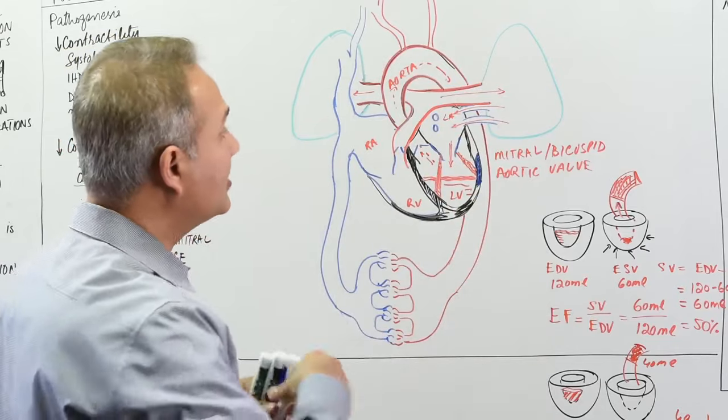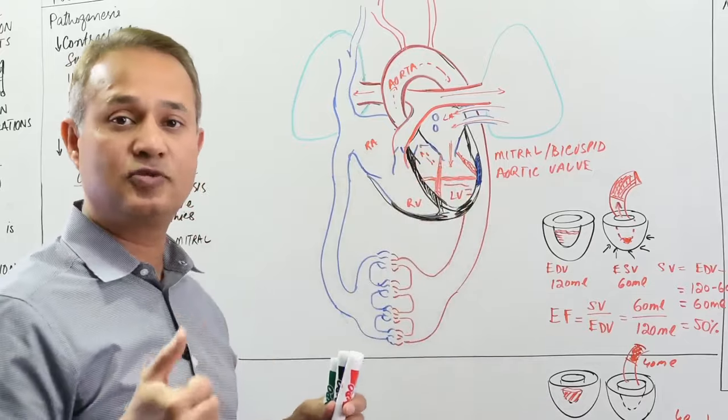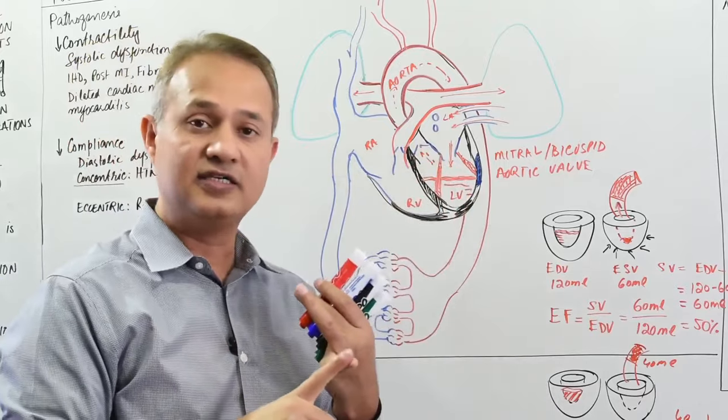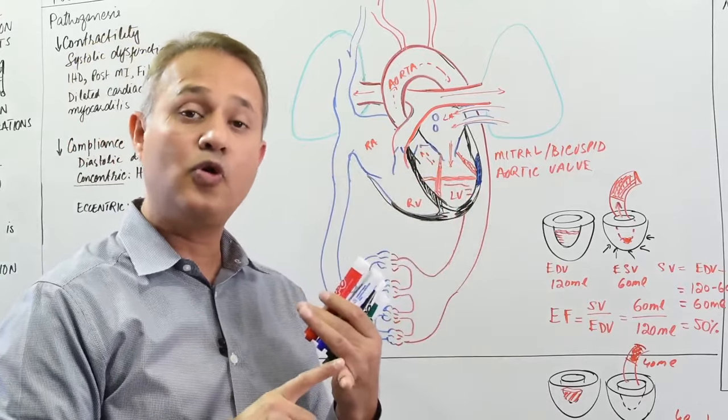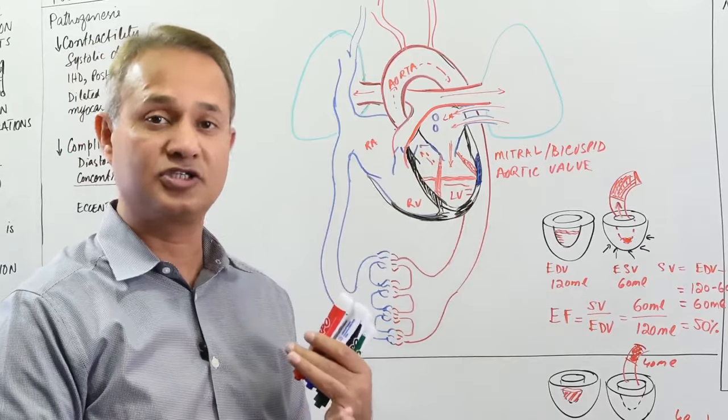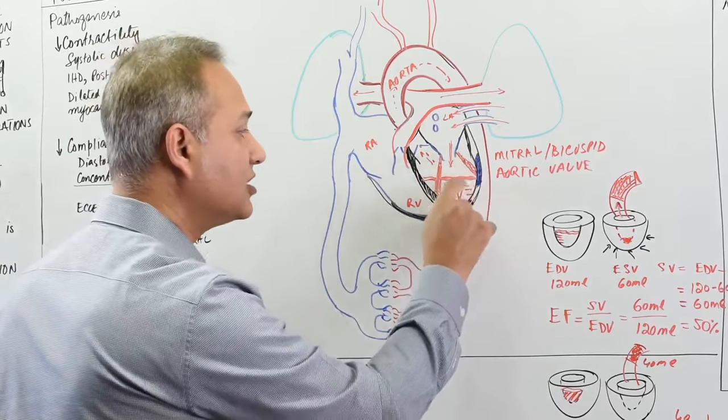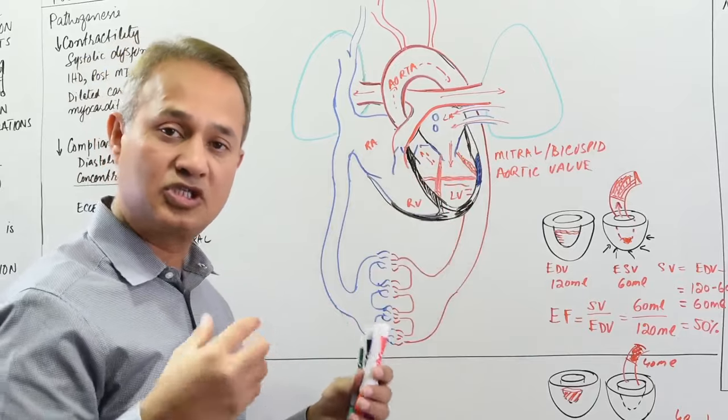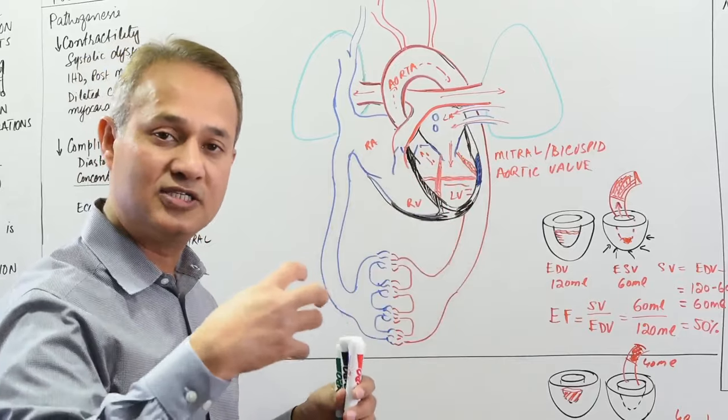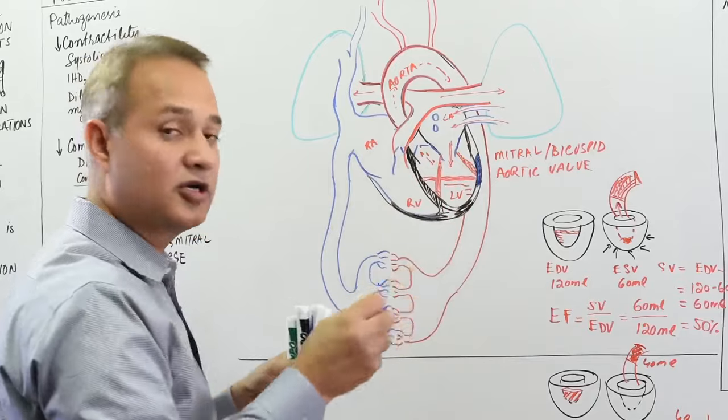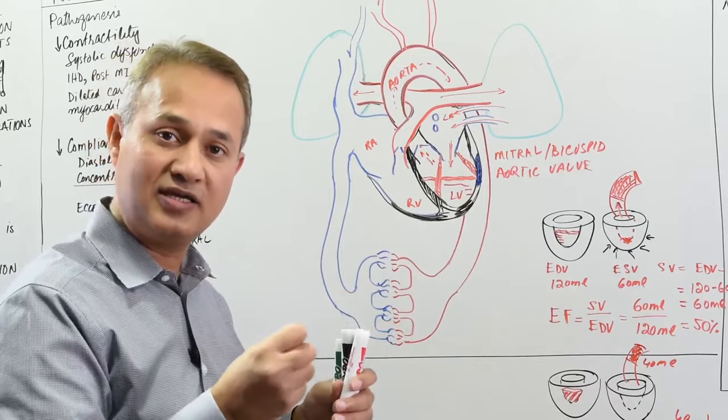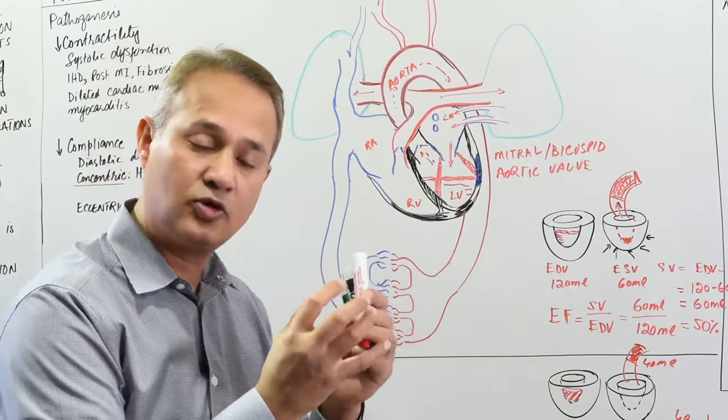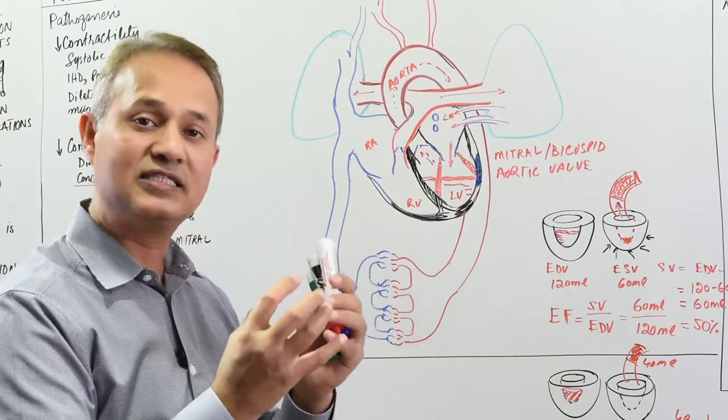Now, what things can cause this? What is the etiology? As I said, ischemic heart disease, post myocardial infarction. So myocardial infarction occurred, after that that part of the muscle has become scarred and weak and it bulges out and it will not contribute in the contraction mechanism, and due to that the systole has become less efficient.